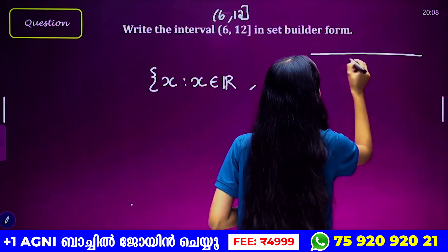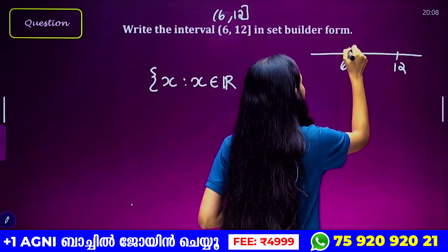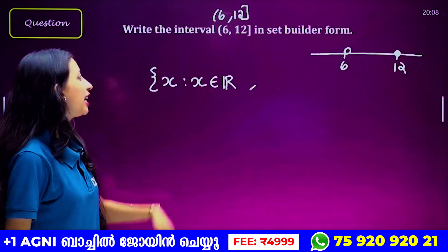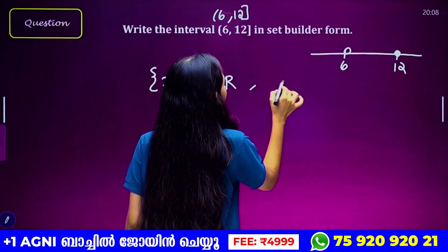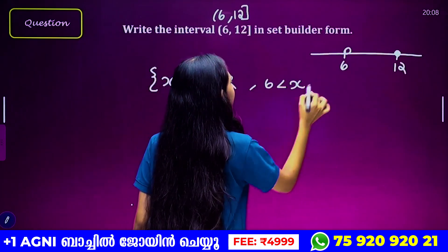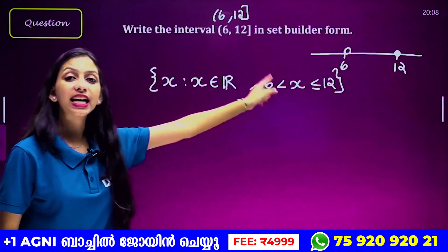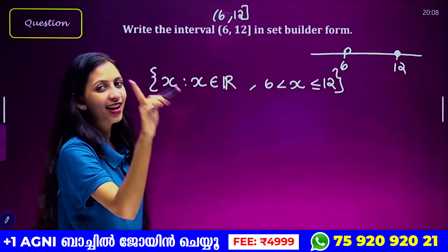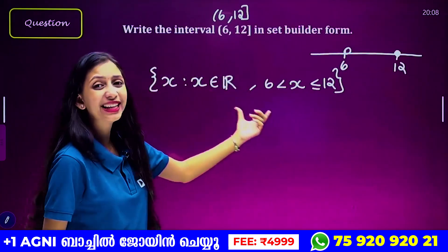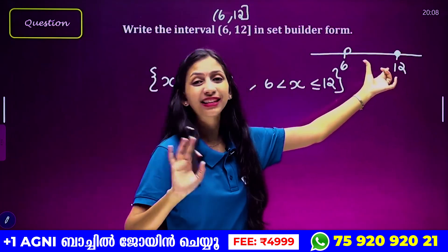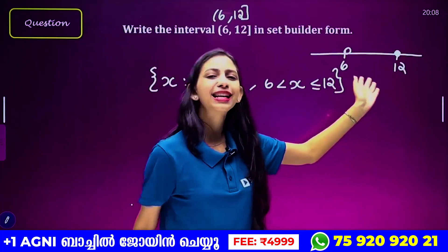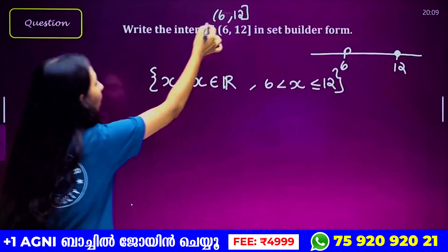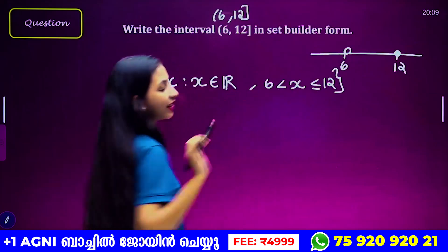What do you say — we have a number line. Here we have 6 and 12. We have include — and 12 we have include. It's not clear — we have 4 open, and we are included. What do you say: x greater than 6 less than x less than or equal to 12. The number belongs to R. Open and closed mean less than or equal to.